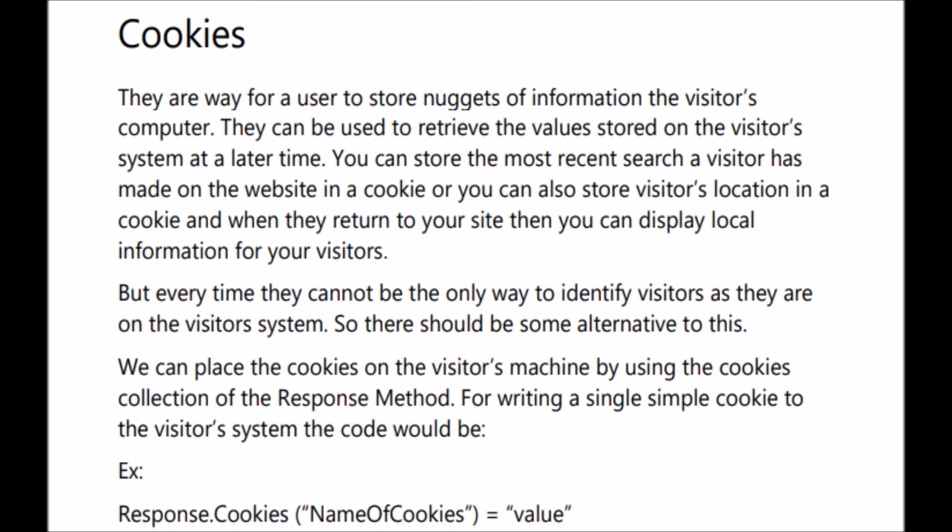Now we will be studying cookies. Cookies are basically a way for a user to store nuggets of information on the visitor's computer. They can be used to retrieve the value stored on the visitor's system at some point of time or later on. You can store the most recent search a visitor has made on the website in a cookie, or store the visitor's location so that when they return to your site you can display local information. We can place cookies on the visitor's machine using the cookies collection of the response method. The code is response.cookie, then the name of the cookie, then the value.